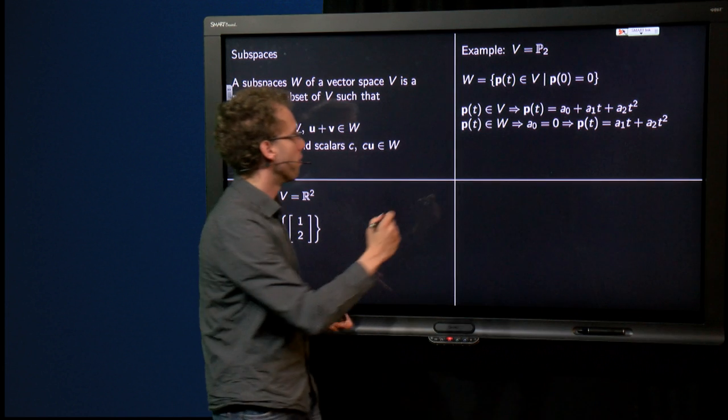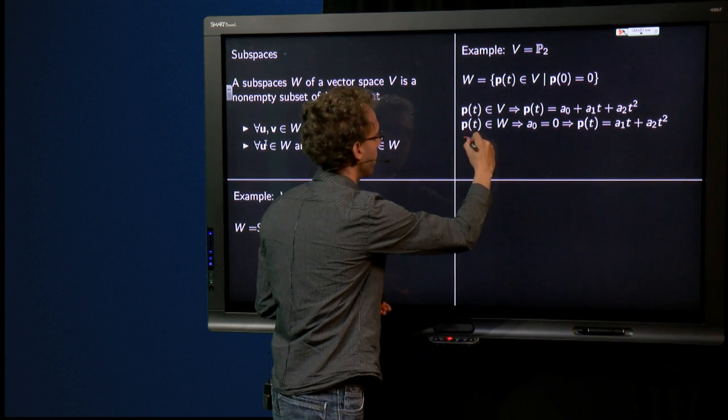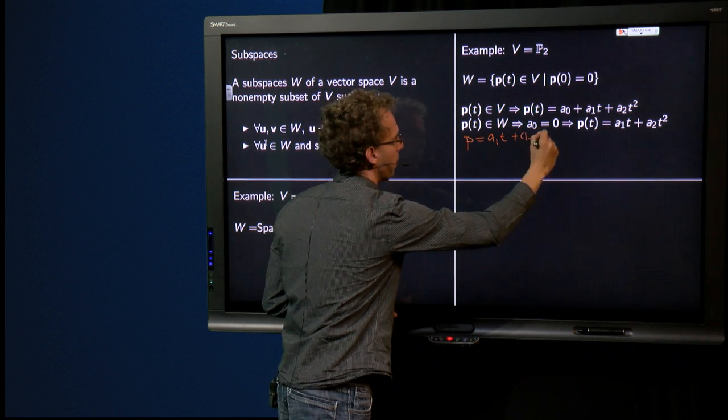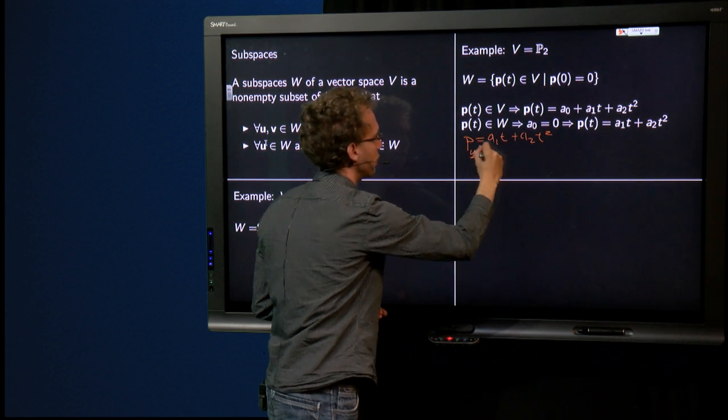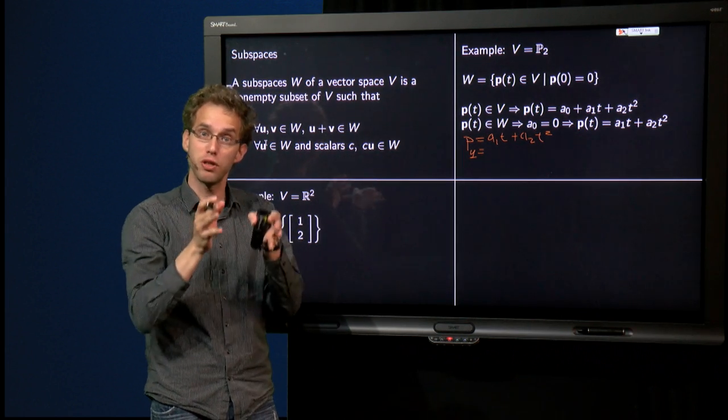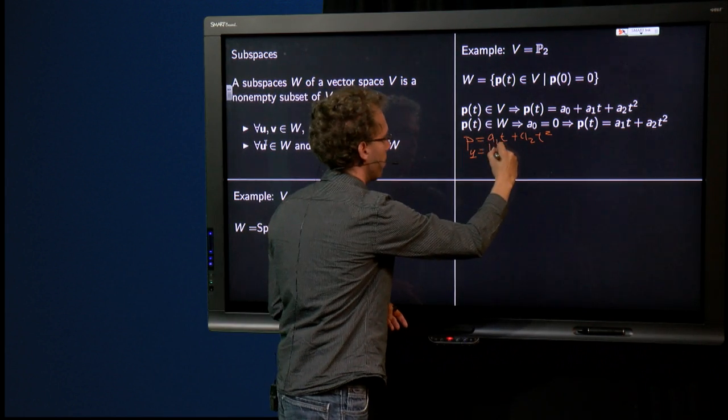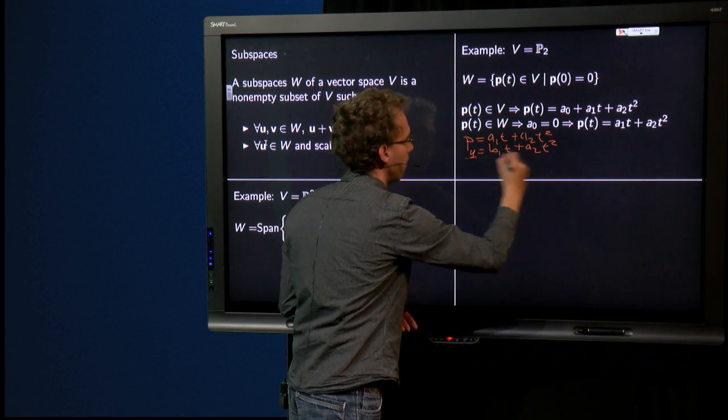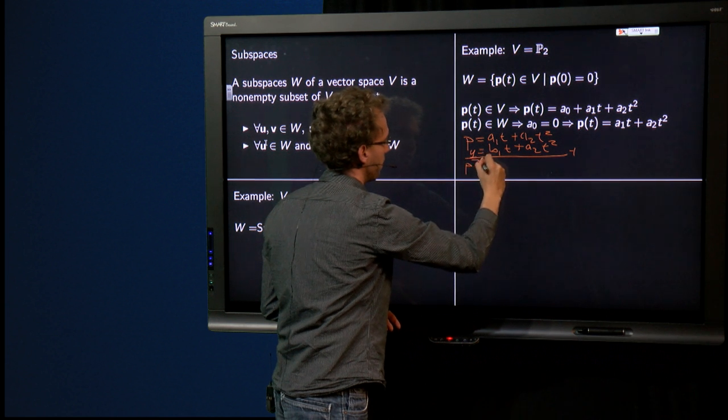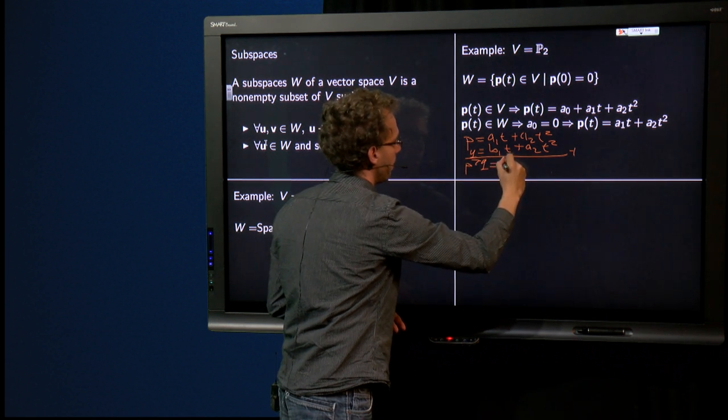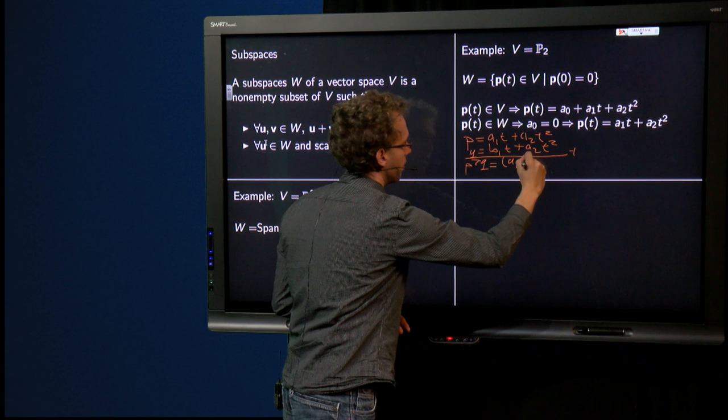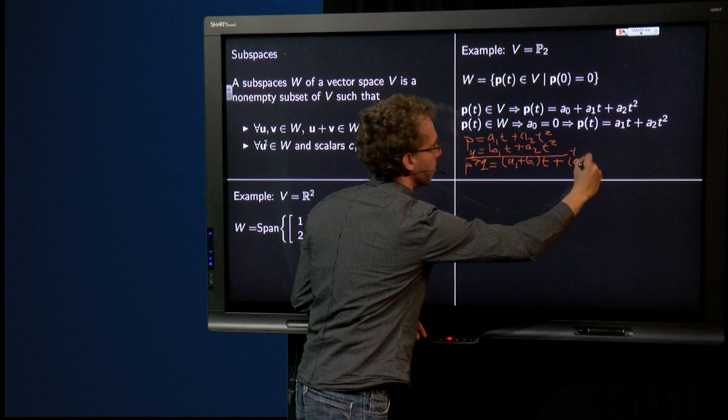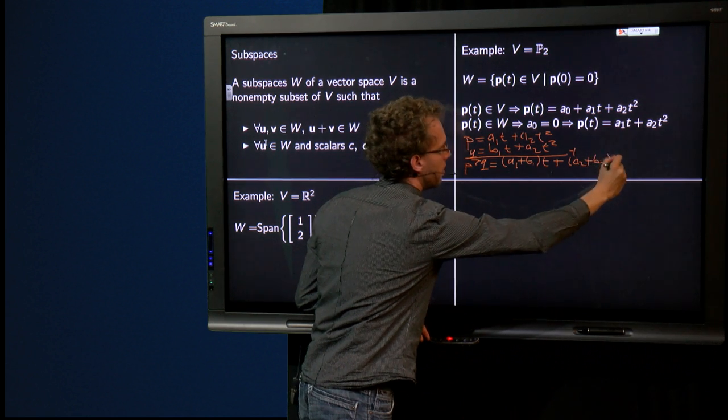Well, if we take two of this form, so p equals a₁t + a₂t², and we take a q which is of the same form, which means that also the first coefficient is 0, so b₁t + b₂t², and we look at the sum, we get p + q equals (a₁ + b₁)t + (a₂ + b₂)t².